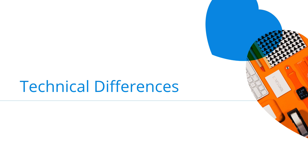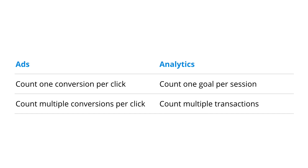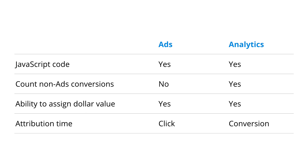Let me cover some key differences between dedicated Google Ads conversion tracking and importing from Google Analytics. Conversion counting differs: Google Ads lets you count one conversion per click or multiple conversions, while Google Analytics counts one goal conversion per session and multiple transactions. Google Ads conversion tracking only includes conversions from your ads, while Analytics includes all marketing channels. Both support static dollar values, but Google Ads also supports dynamic values. Google Ads attributes conversions to the last ad click, while Analytics attributes them to when the conversion occurred.